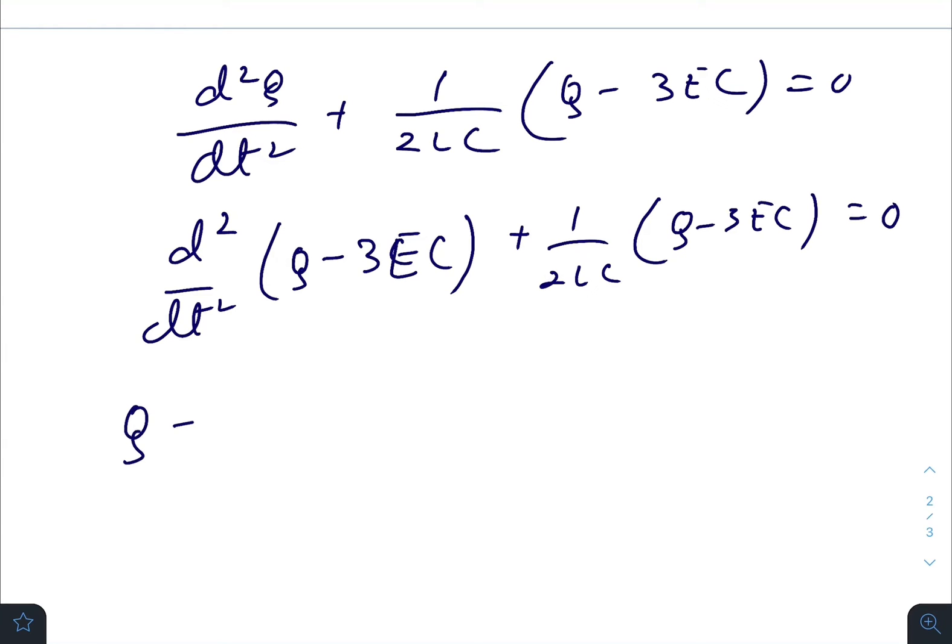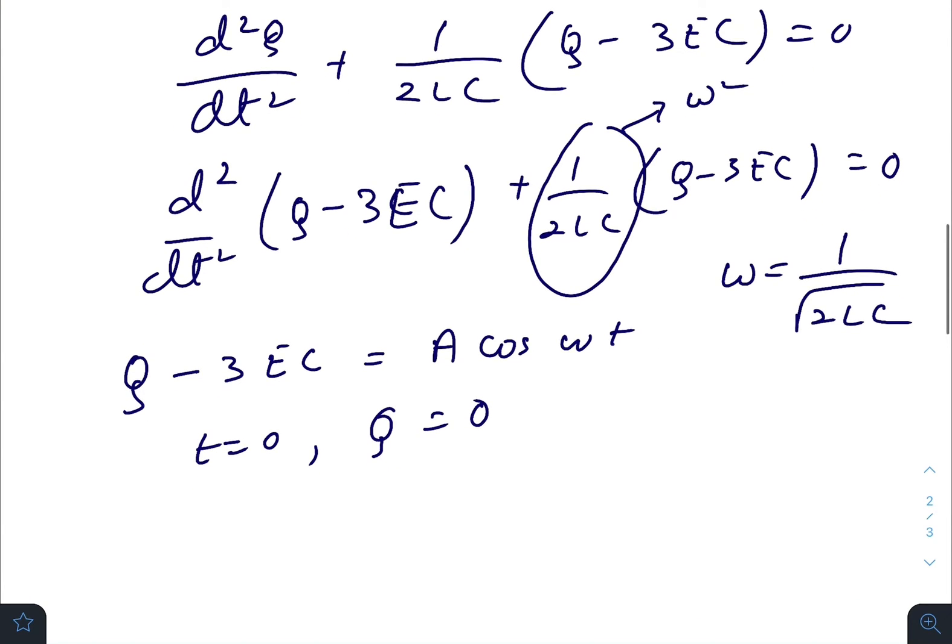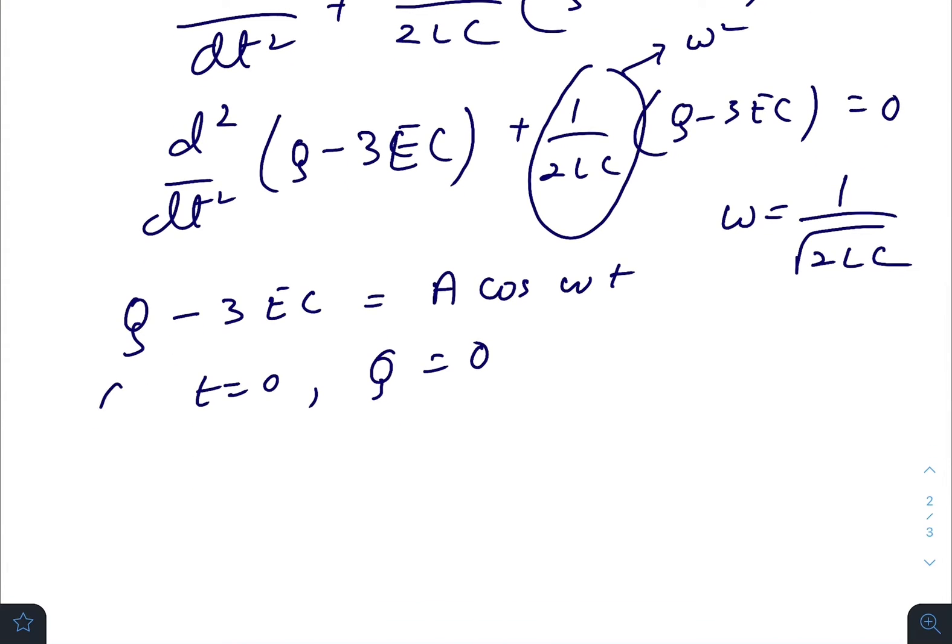Q - 3εC = A cos(ωt), where ω = 1/√(2LC). At t equals zero, capital Q is also zero, as q₁ and q₂ both will be zero. So 0 - 3εC = A, which gives A = -3εC. Therefore, Q = 3εC(1 - cos(ωt)).